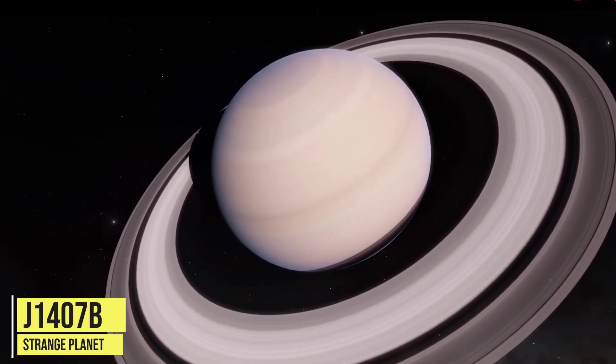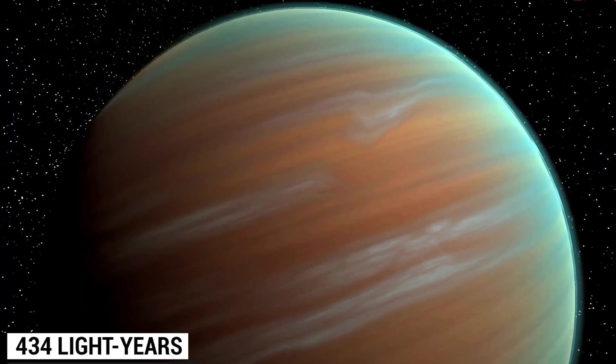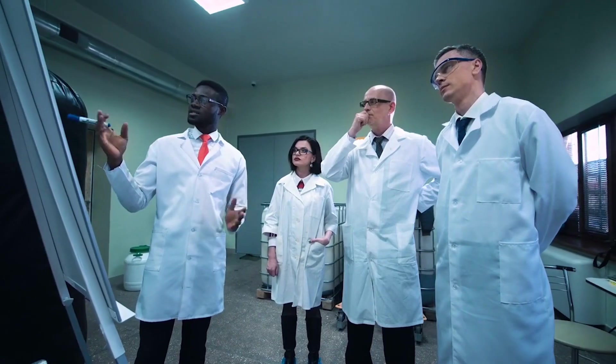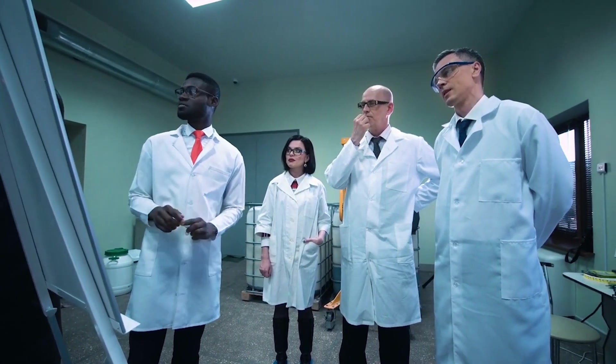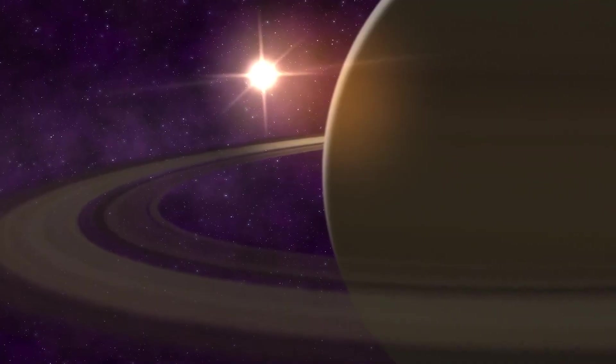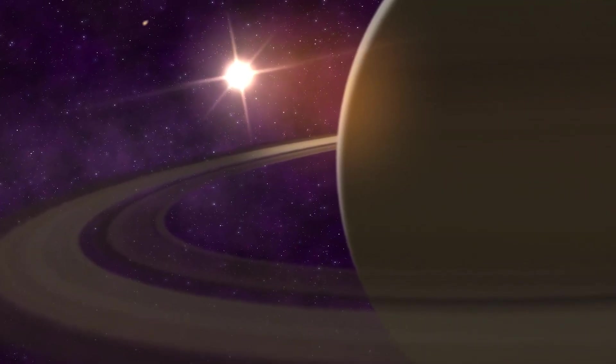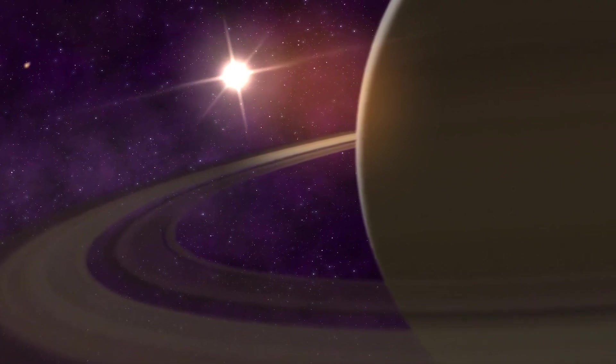J1407b is a strange planet, 434 light-years away from Earth. Researchers tried to measure the planet's mass. It's 10 to 40 Jupiter's mass. J1407b is a huge planet, significantly bigger than Jupiter.